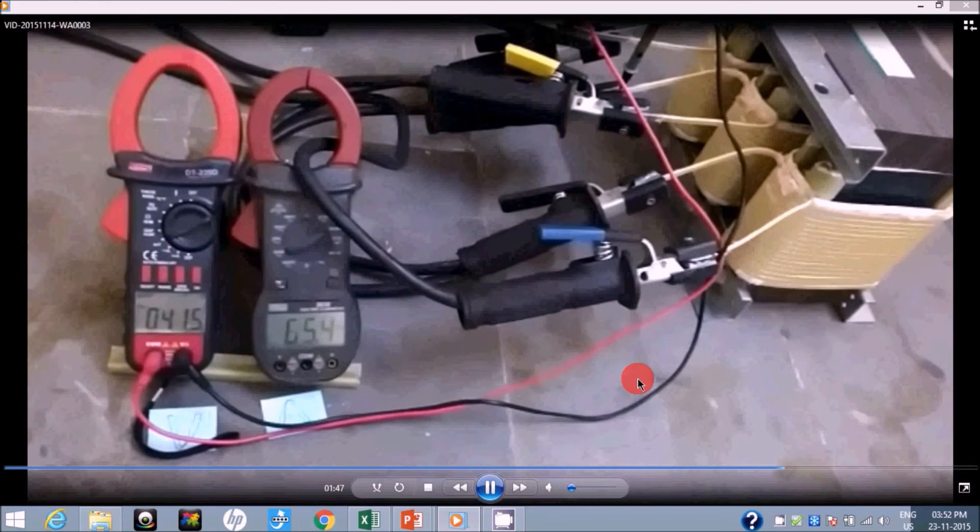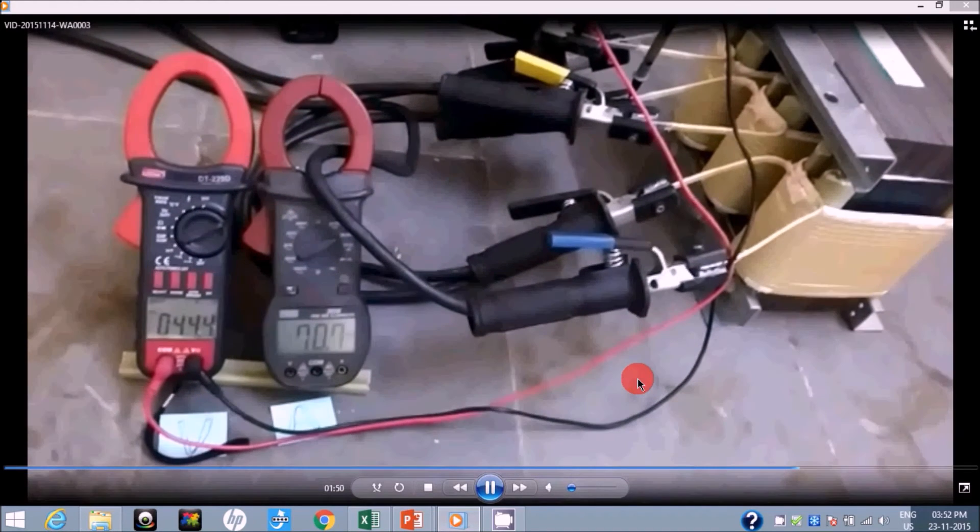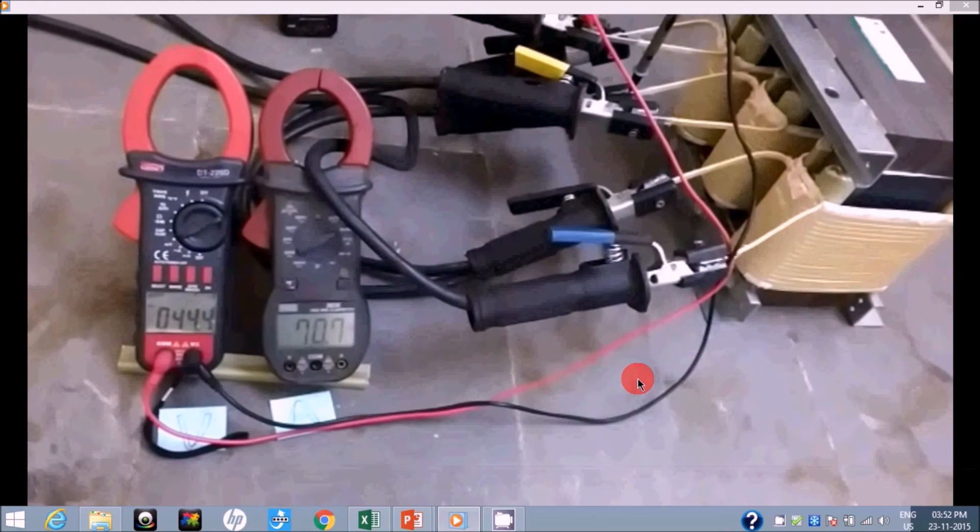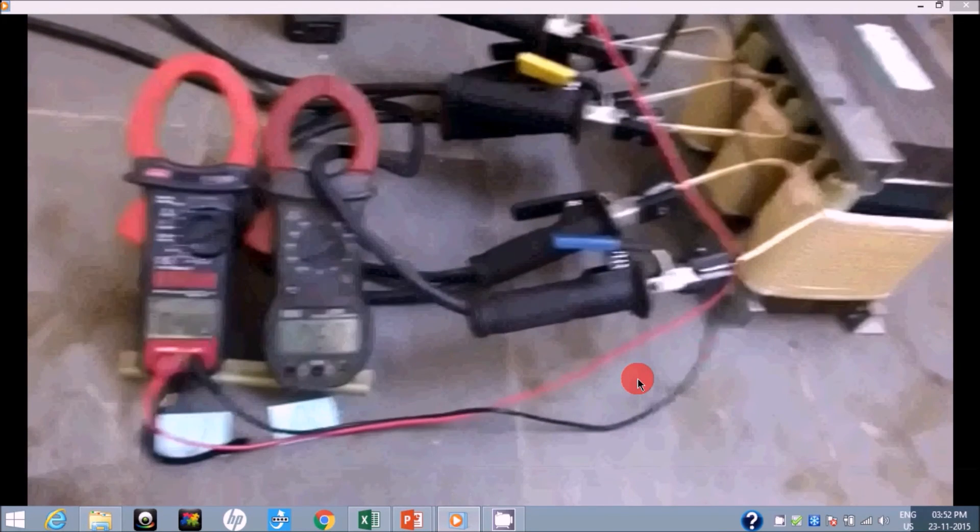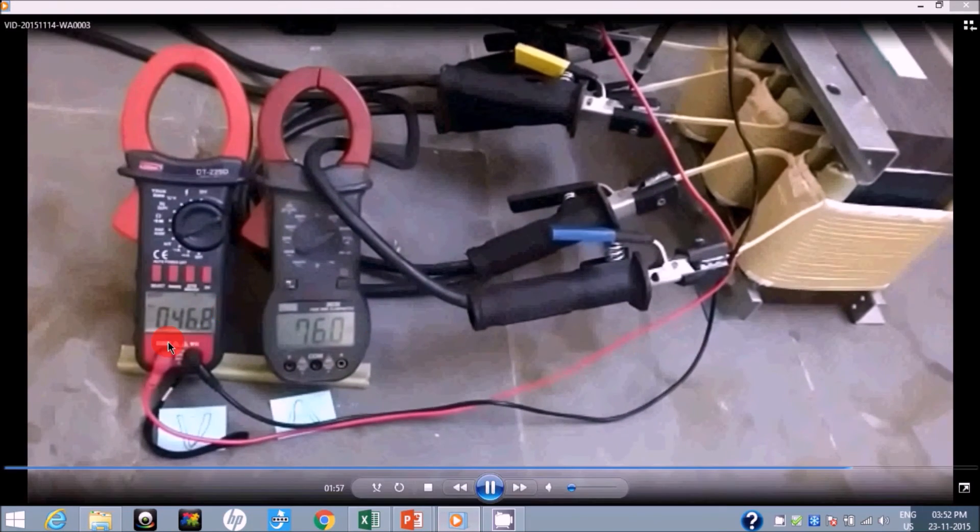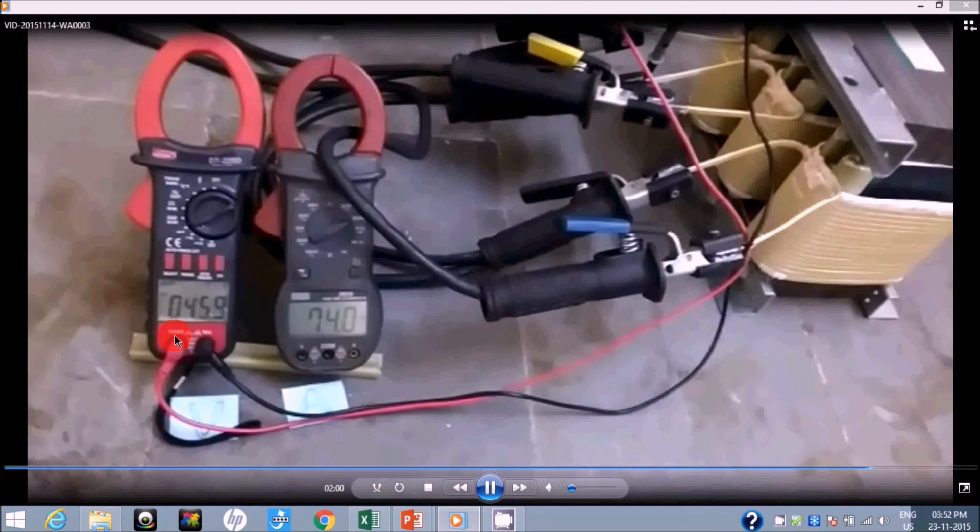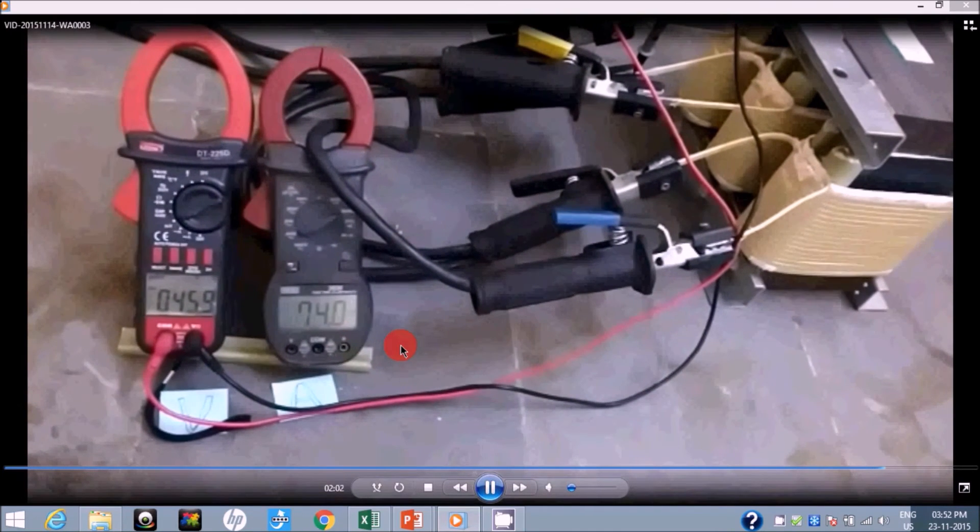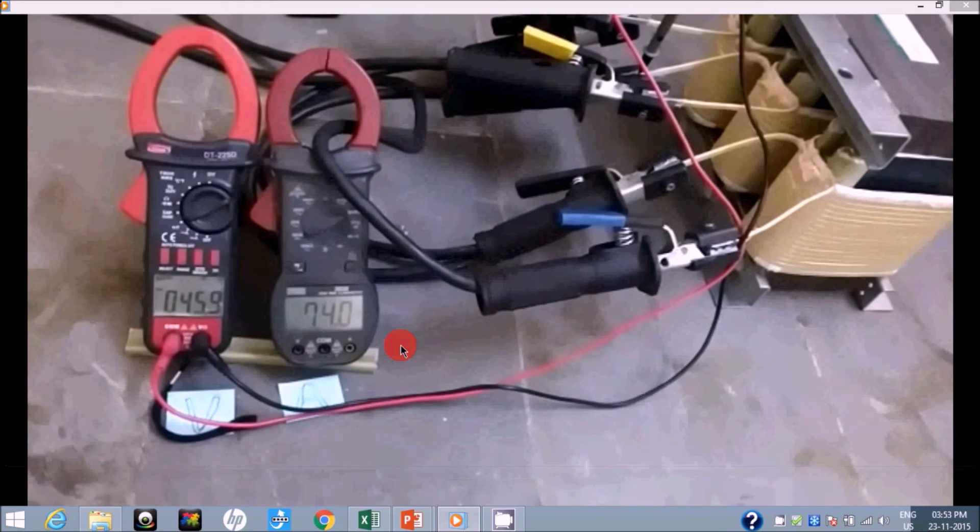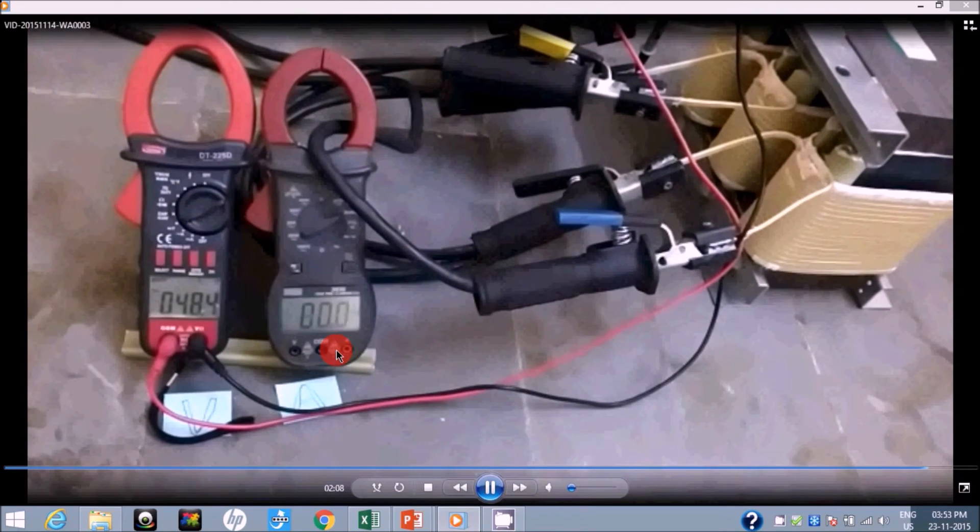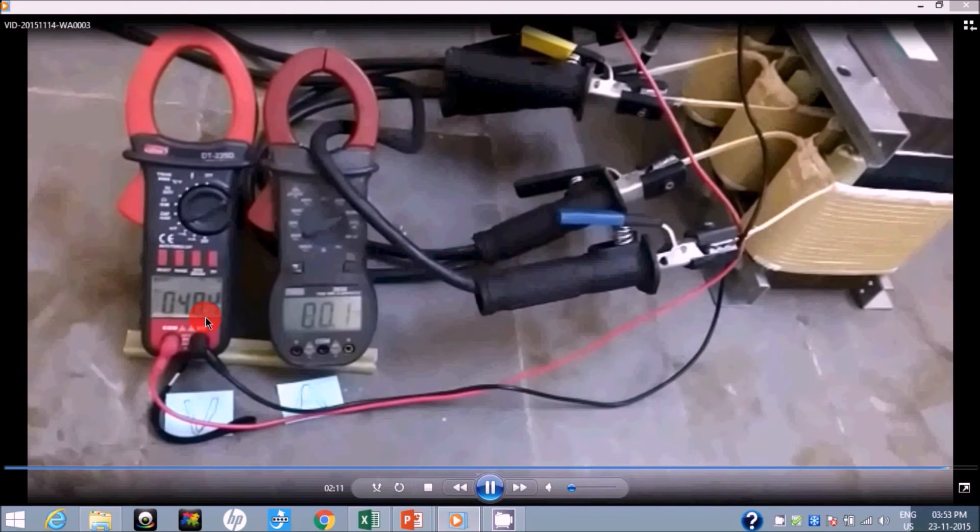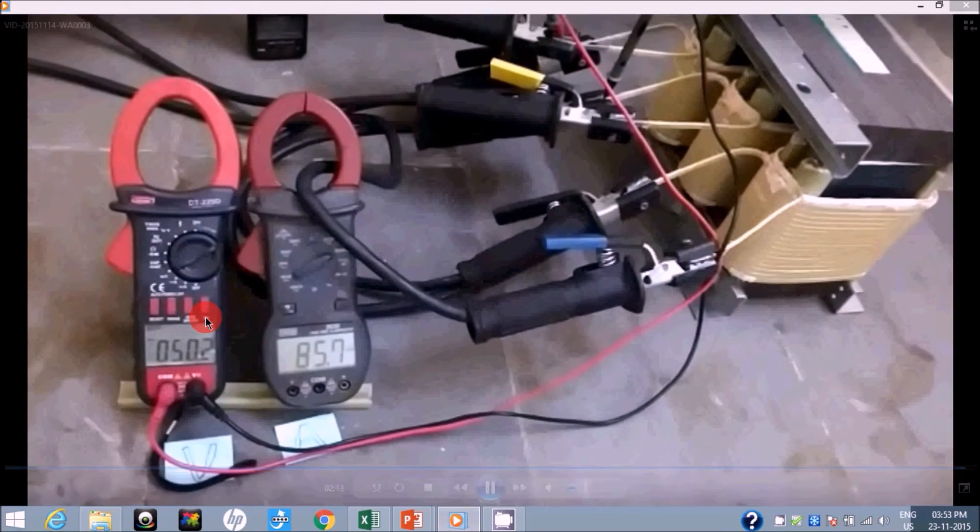Now we have reached 65, started from 29. Now we are reaching to 70. This many times current we are trying to flow to see the voltage developed. So we can have the inductance value at all these currents. We have reached to 80 ampere now and at 80 ampere we are getting 48.4. 85 we are getting 50.